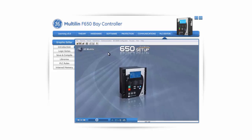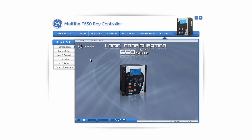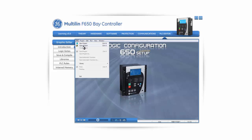Navigate to the Setpoint menu and select Logic Configuration. This will open a new part of the EnerVista 650 setup software — the 650 PLC Editor. Once in this new section of the software, open a graphical logic project using the menu File and then select the project of your choice. Alternatively, it is possible to create a new project, which would open up a blank canvas to start building your new logic.